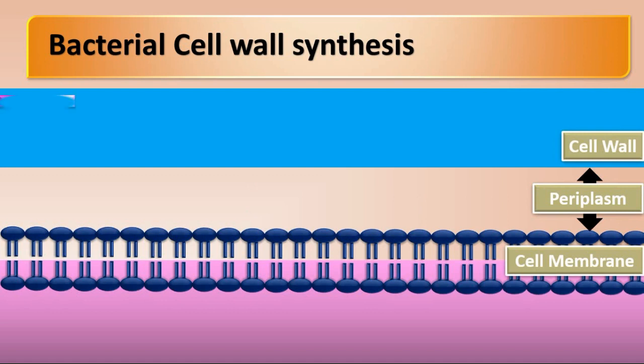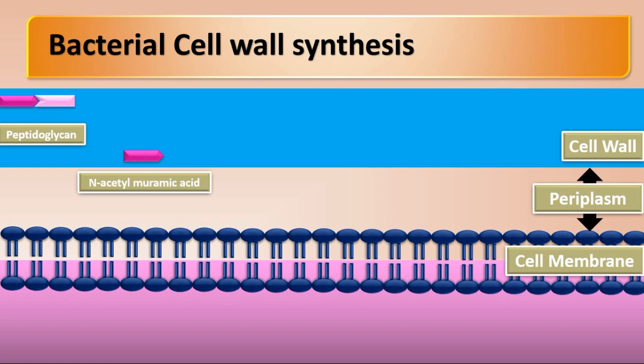Peptidoglycan is the most important component of the cell wall. It is a polymer made up of alternate bonding of N-acetylmuramic acid and N-acetylglucosamine.